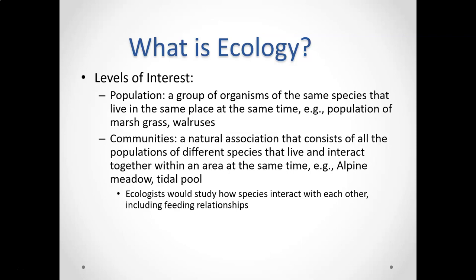The first term is a population. We can study a group of organisms of the same species that all live in the same place at the same time. That's one level we can study in ecology — a population of walruses, grass, blackbirds, whatever we want to study. That would be our smallest grouping.